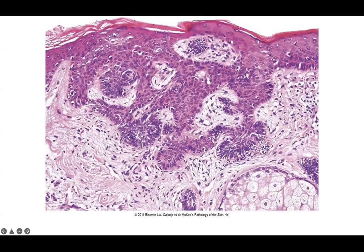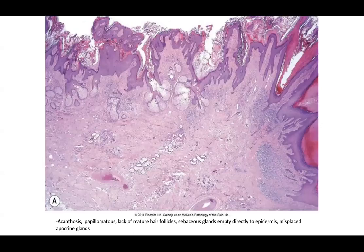Next to nevus sebaceous, you can often get basaloid proliferations that start to mimic adnexal tumors. You may see things that look more like a basal cell with peripheral palisading and some clefting artifact, evolving trichoblastomas, or syringocystadenoma papilliferum. When you see a nevus sebaceous, definitely look at the entire specimen for any adnexal tumor associated with it. There are many examples of multiple adnexal tumors within one nevus sebaceous excision.